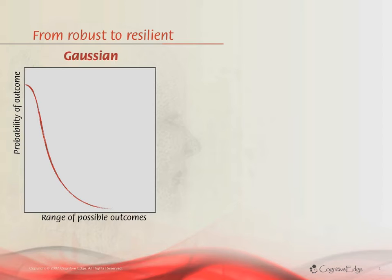All of this is linked to risk, and risk has traditionally been assessed on the basis of a bell curve, or a Gaussian distribution, to be more technically accurate.